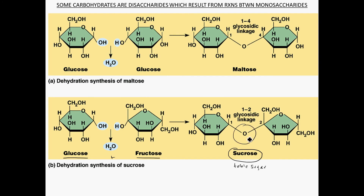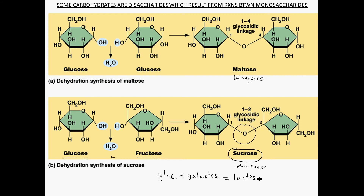The bond in sucrose needs to be broken by an enzyme — sucrose is fructose plus glucose. Maltose, the sugar found in malted milk balls like Whoppers, is made up of two glucoses. And if you combine glucose plus galactose, you get lactose, which is the sugar found in milk. These are all disaccharides you should know: lactose, sucrose, and maltose.